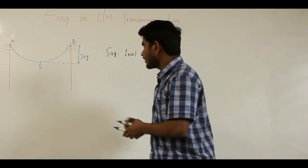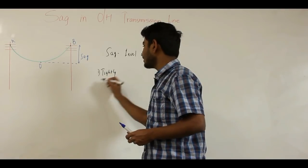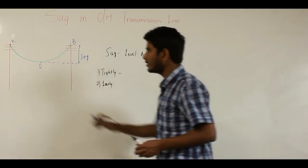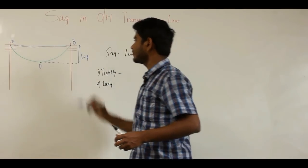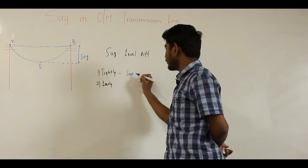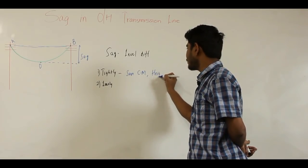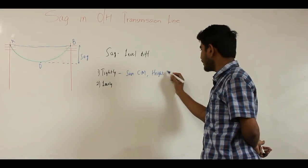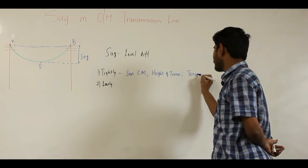The connection of conductors between two transmission towers can be done tightly or loosely. When the connection is tight, you can save conductor material and avoid the extra height of towers needed to ensure ground clearance — that is the distance between the lowest point on the conductor and the ground. However, the disadvantage of a tight connection is that tension increases.